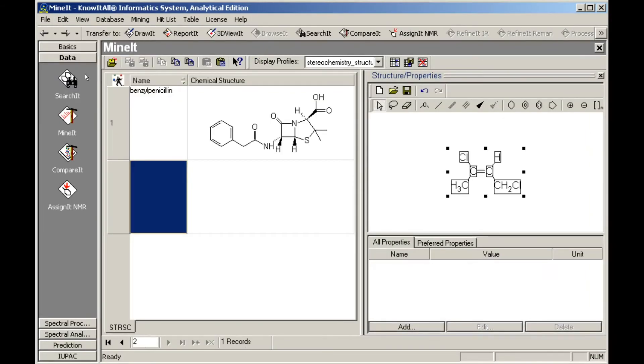The structure is pasted into the Structure Properties pane. Click Save to add it to the database record. Then add properties.